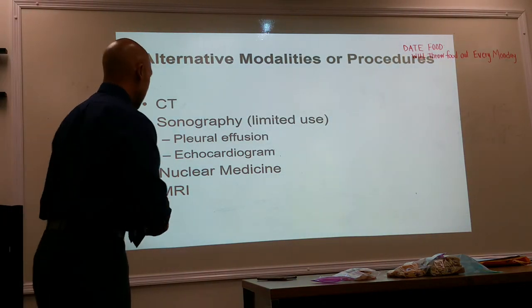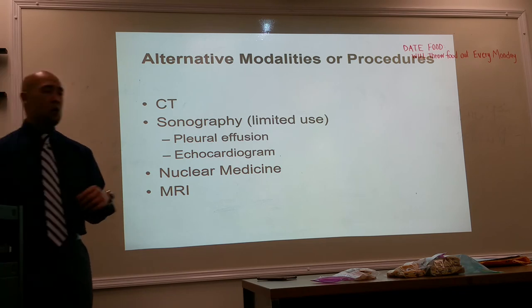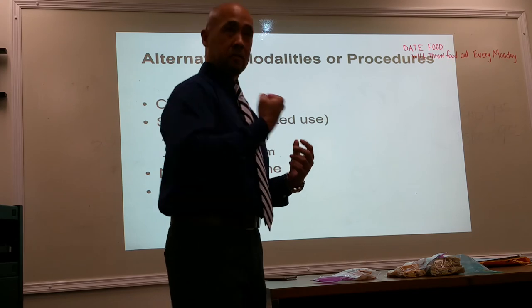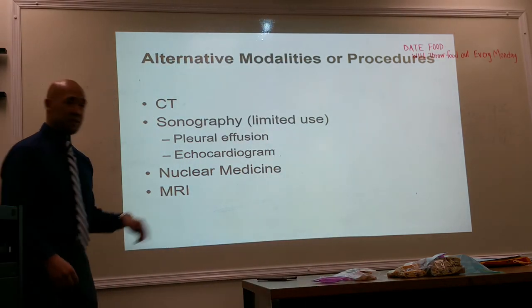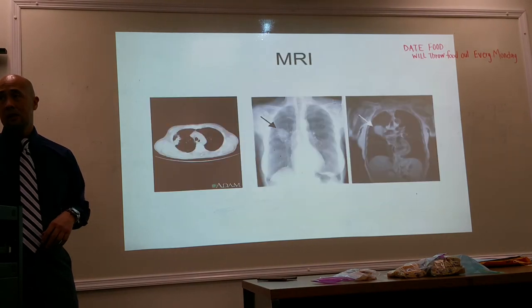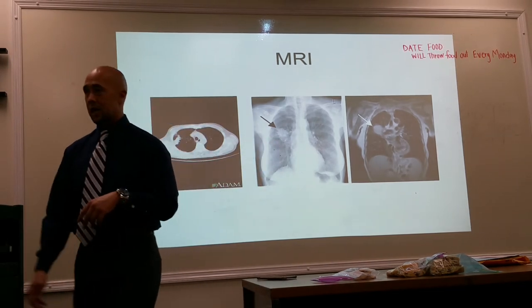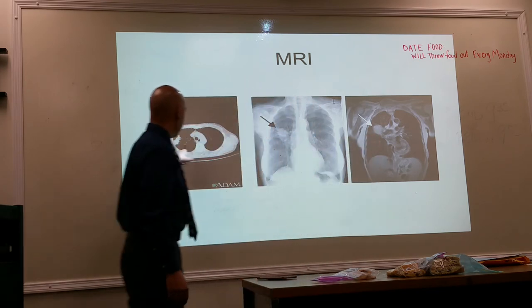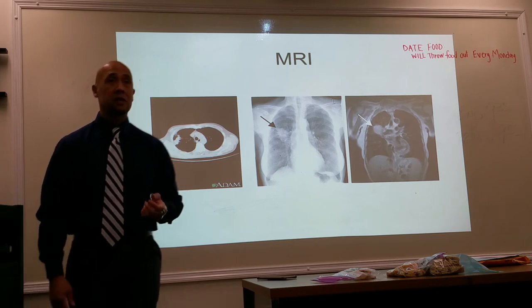Other modalities for evaluating the chest and heart include CT, ultrasound — though with limited use since ultrasound doesn't penetrate bone well — nuclear medicine, and MRI. For example, a large nodule in the right chest area visible on chest x-ray can also be demonstrated on MRI and CT, which are very good tools for evaluating and localizing pulmonary nodules.